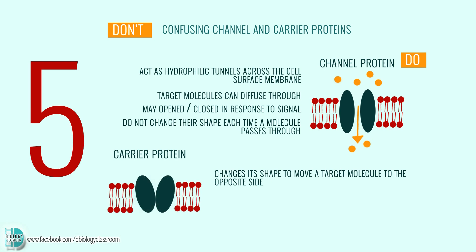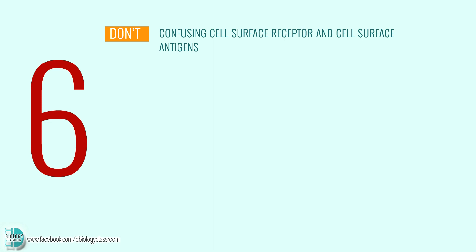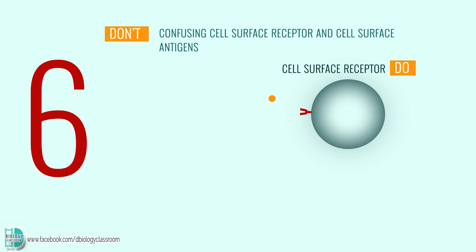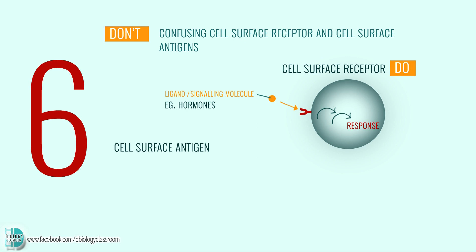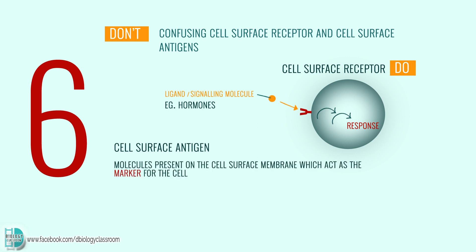Then it will change back to the original configuration. Number 6: confusing cell surface receptors and cell surface antigens. A cell surface receptor is where an extracellular ligand or signaling molecule binds to create a particular change inside the cell — for example, the cell surface receptor for hormones. Cell surface antigens are molecules present on the cell surface membrane which act as a marker for the cell; they can be used to identify and classify the cell. For example, the classification of human blood groups is based on the antigens present on one's red blood cells.